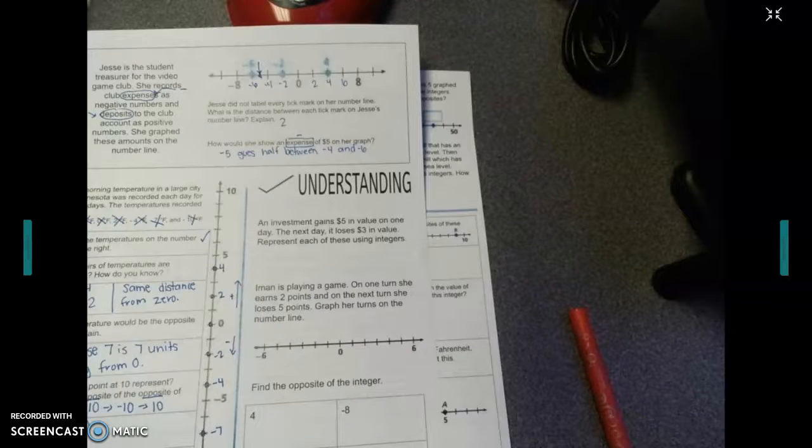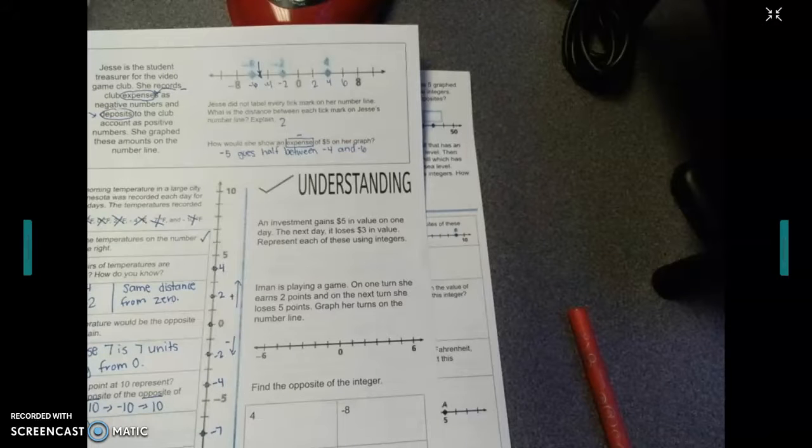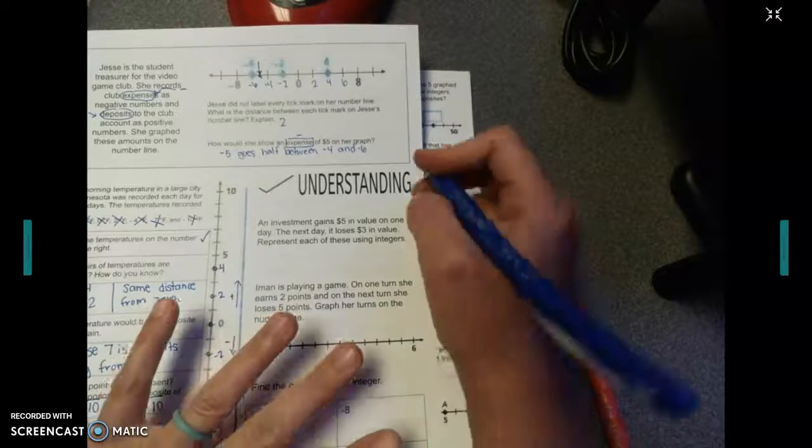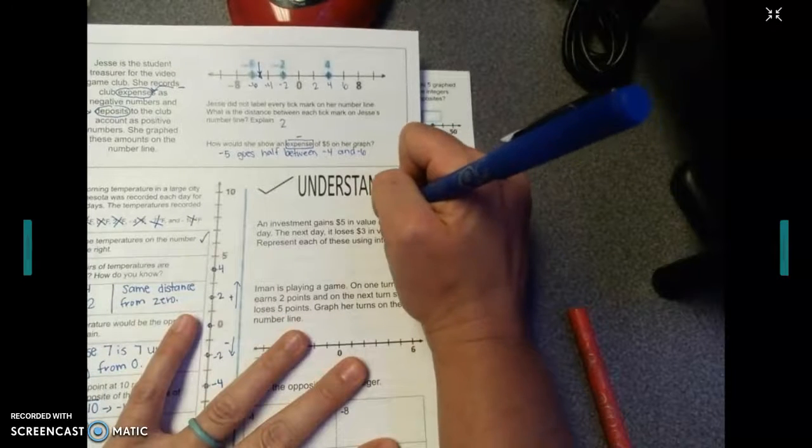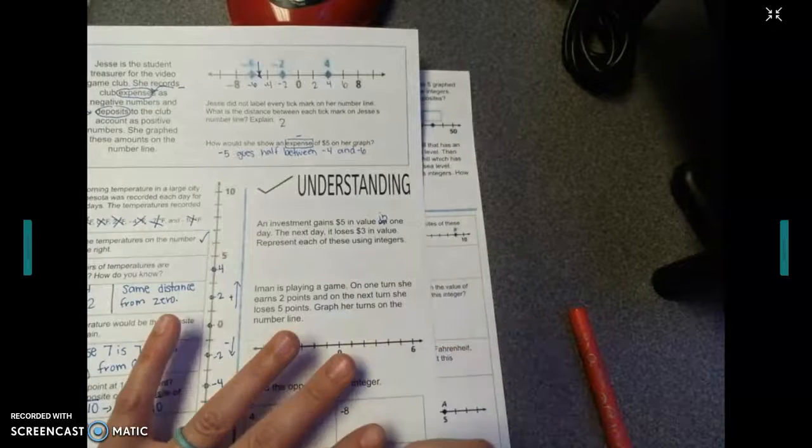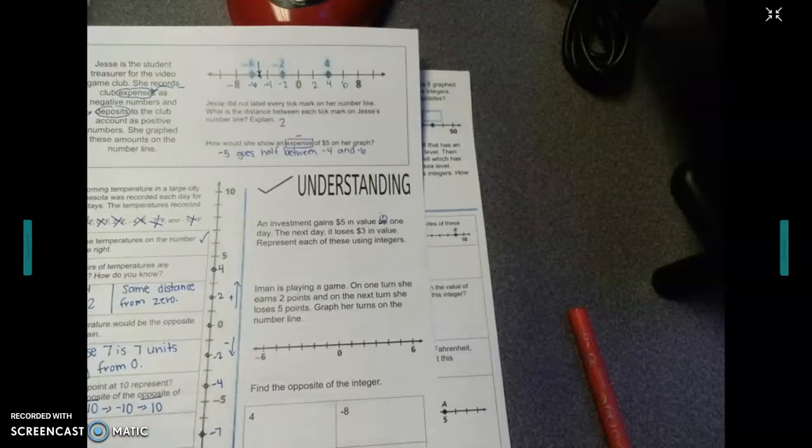So let's look at this first one. An investment gains $5 in value in one day. The next day it loses $3 in value. Represent each of these using integers. So some of you may have struggled on how to write these.